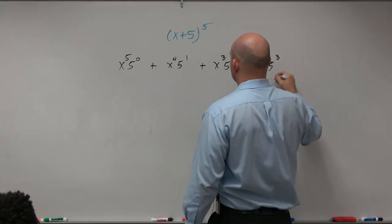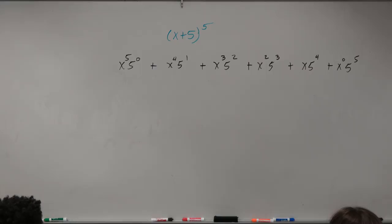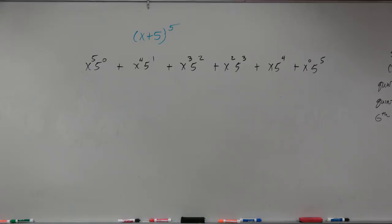plus x squared, 5 cubed, plus x, 5 to the fourth, plus x to the 0, 5 to the fifth. Does everybody see how I at least spread that out? All I did was the ascending, descending. To me, that is the easiest thing to understand, is the ascending, descending.